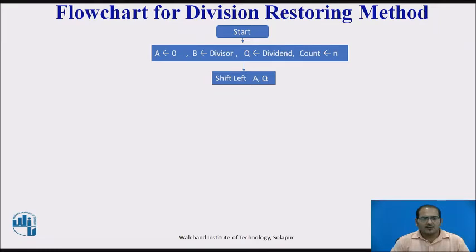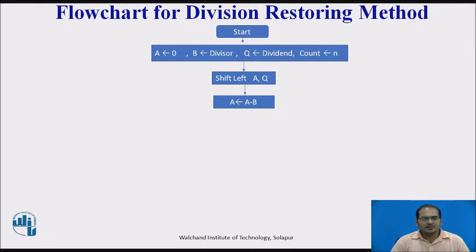After initialization, shift the content of A and Q registers left by one bit position. Then perform the A minus B operation. A is 0 initially and B contains the divisor value, so the result will be stored in the accumulator A register.